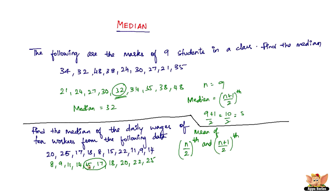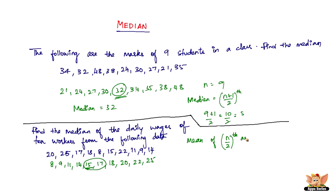You have to find the arithmetic mean of 15 and 17. So n by 2 is nothing but 5, that is the fifth value. n by 2 is 5, and 5 plus 1 is 6. So the fifth and sixth values. 15 plus 17 divided by 2, that is nothing but 32 divided by 2, which is 16.